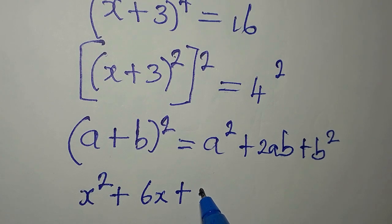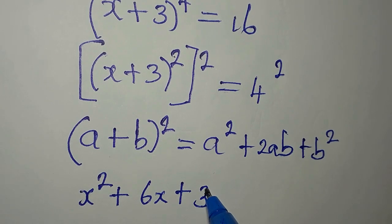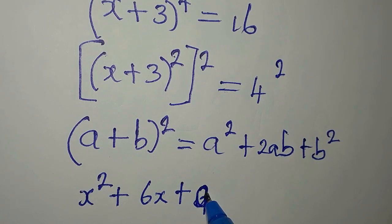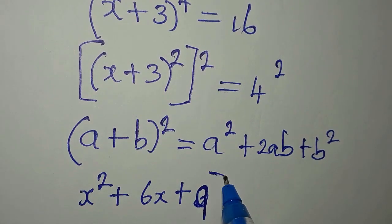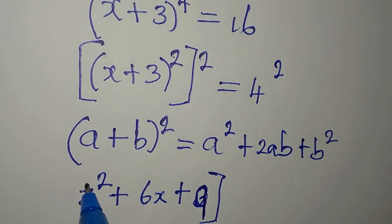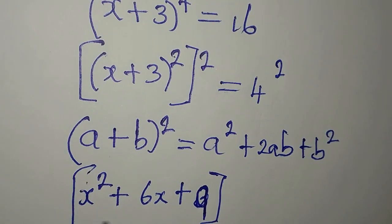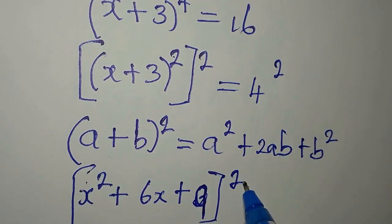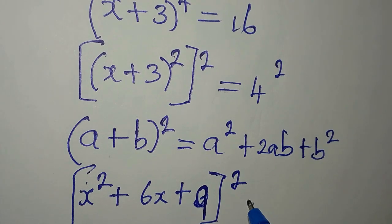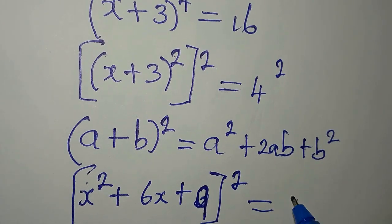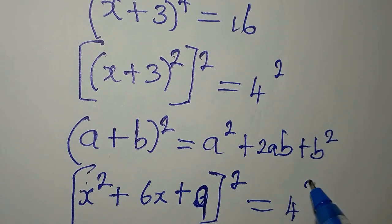So I will write 3 squared, and 3 squared is 9, so let me just write 9. That's what we'll have in our brackets, then we raise this to the power of 2. Now everything is equal to 4 squared.